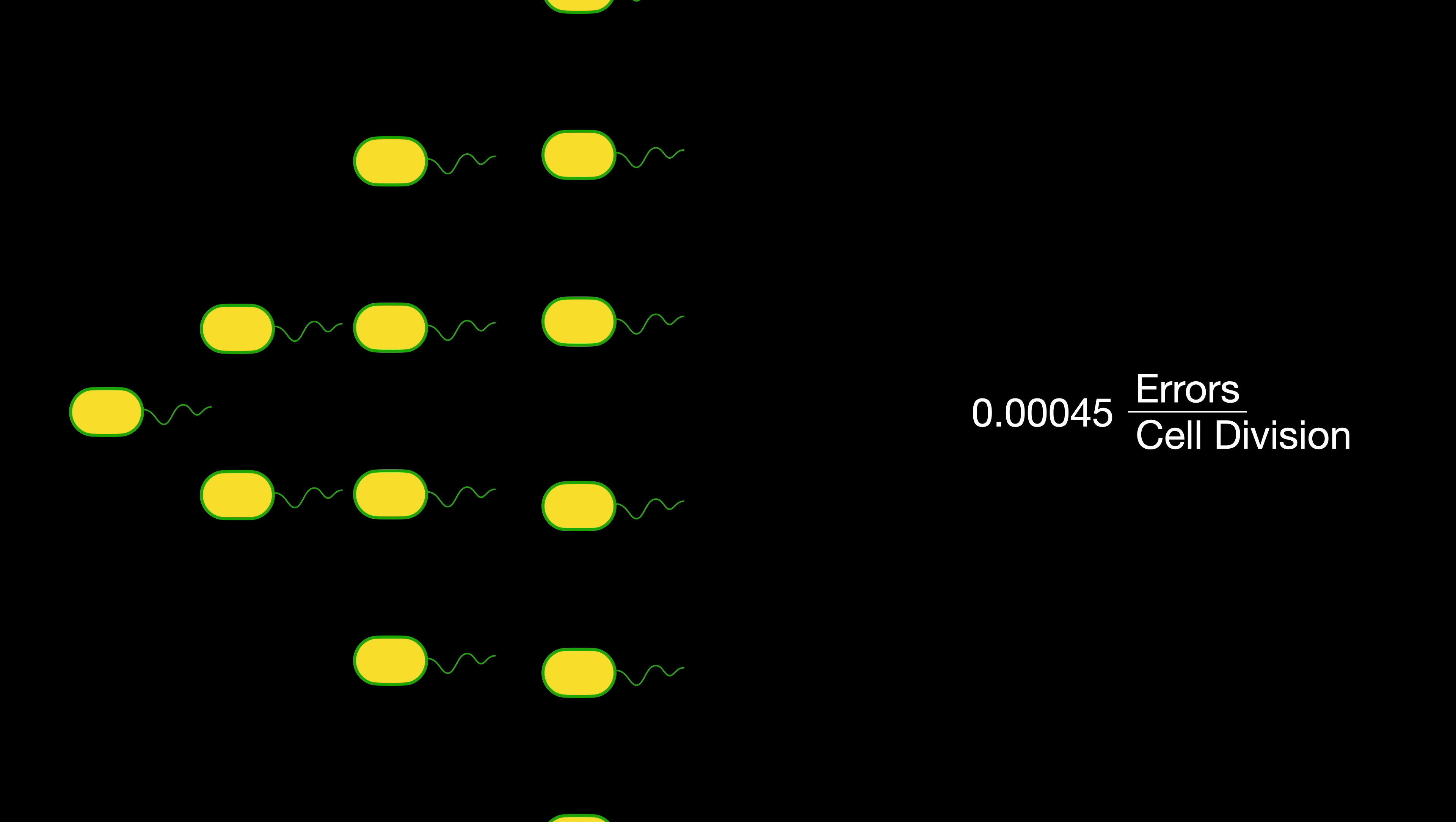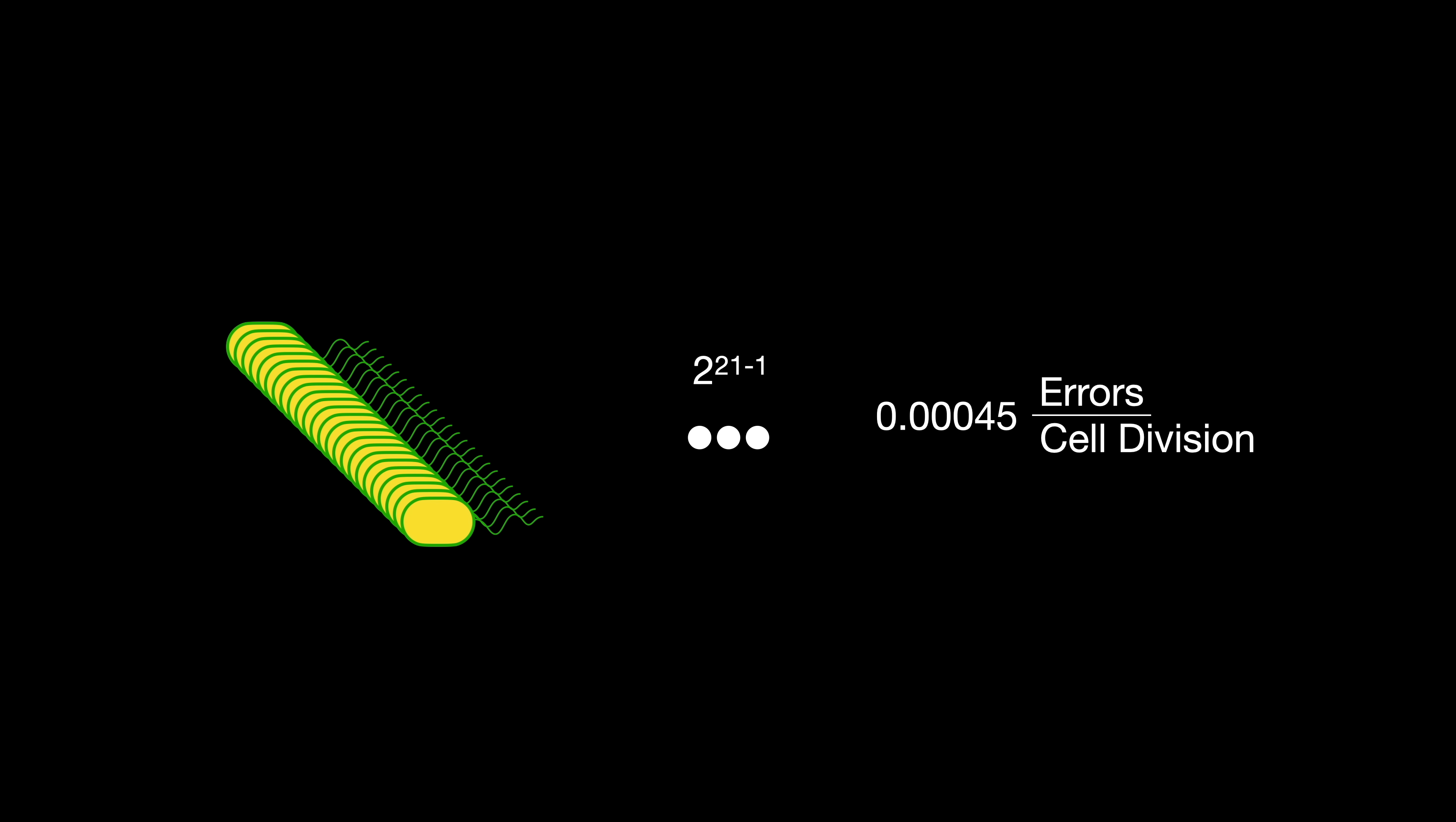Let's look at something as simple as E. coli. Its genome is around 4.5 million letters long. And that means in one cell division, it makes 4.5 million in 10 billion mistakes. That's still small, but consider this. That's only one cell division. And each generation, the number of cell division events increases twofold. So after 21 generations, that's 2 to the 20 cell divisions, it will have made 471.8 mistakes. Those mistakes can be in the same cell or in different ones, as these are all independent events.